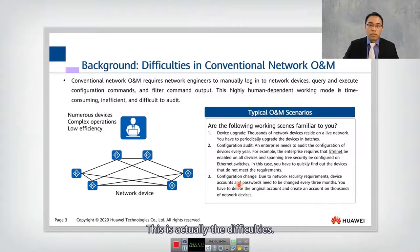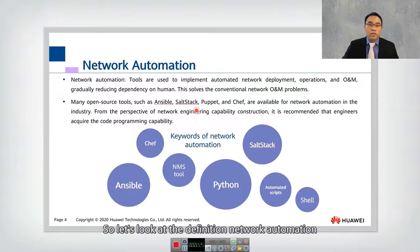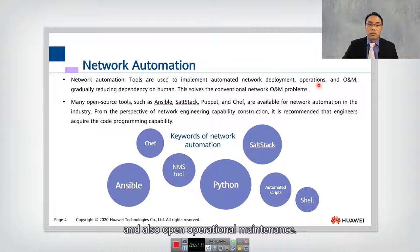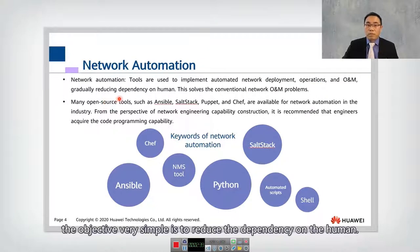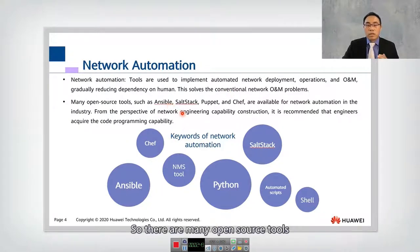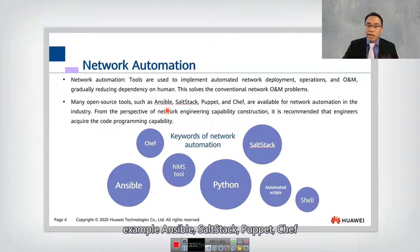So what is network automation? The definition is: tools that are used to implement automated network deployment, operation, and maintenance. The objective is very simple — to reduce dependency on humans and solve the conventional problems faced by network engineers. There are many open source tools available currently, such as Ansible, Salt, and Puppet.